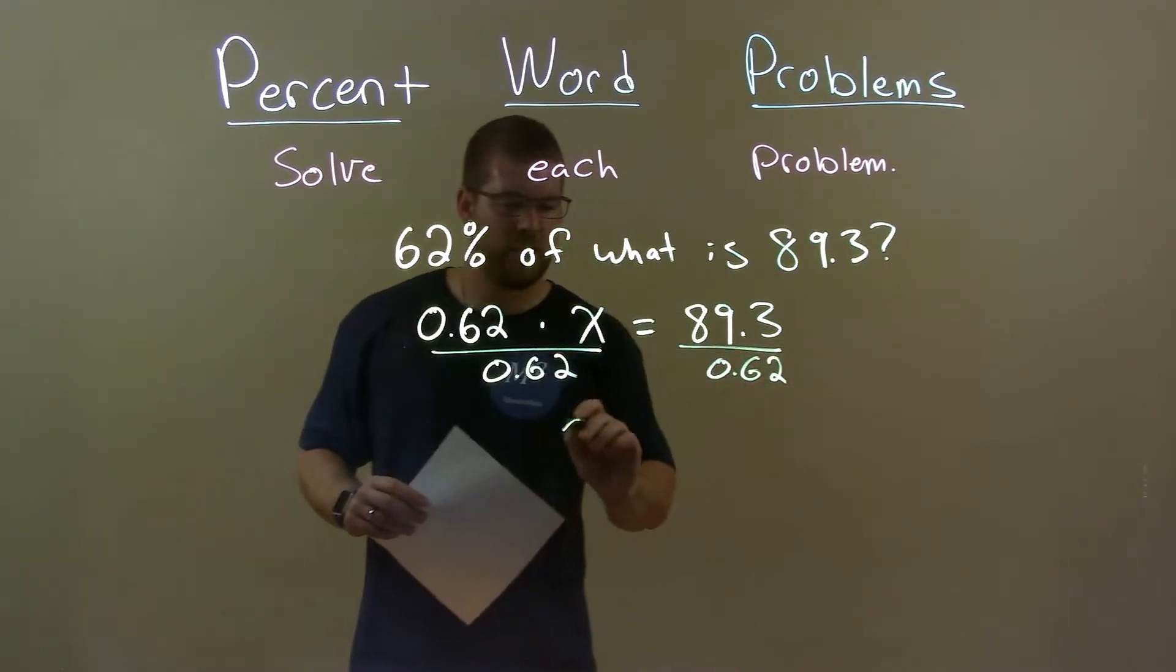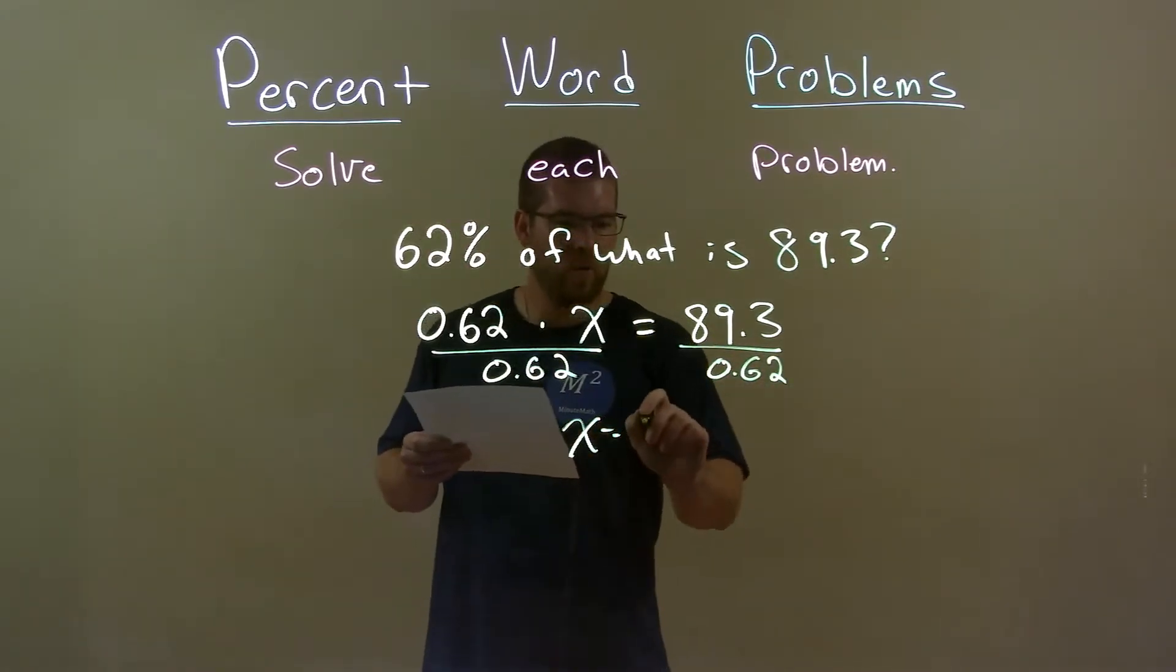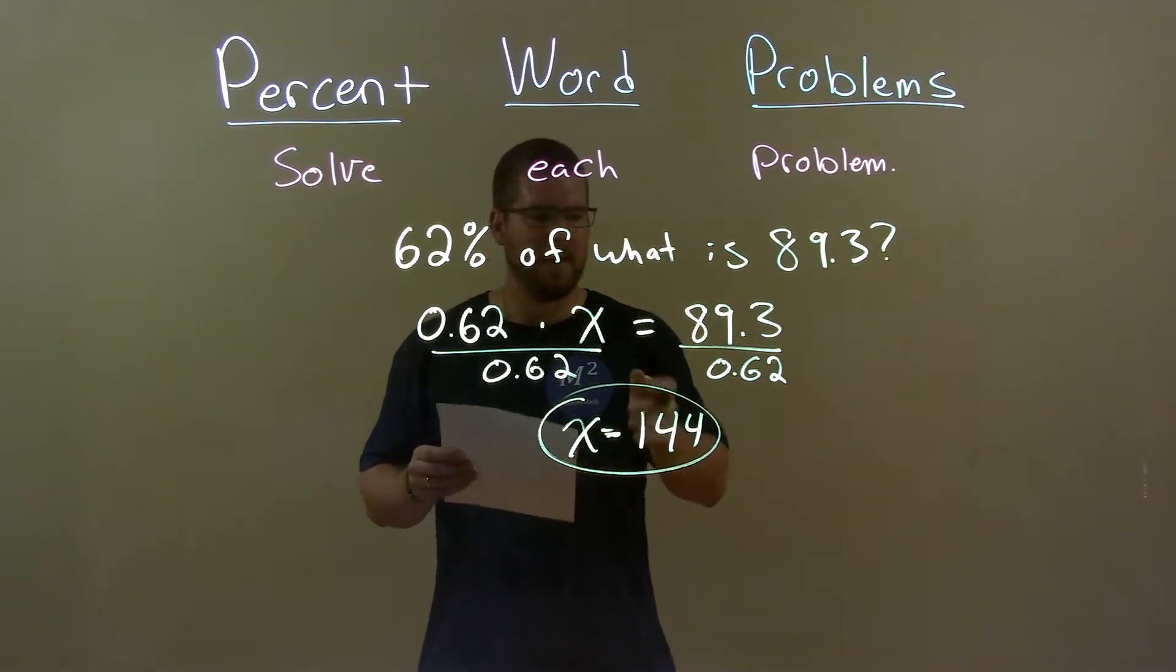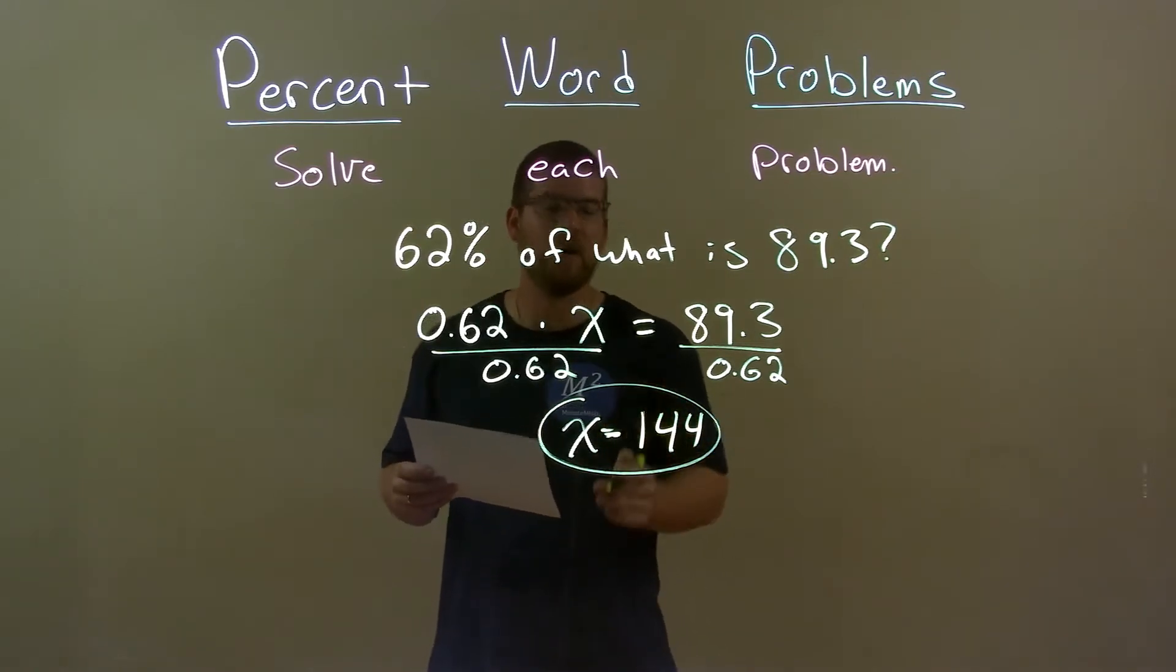And we're left with x equals, I have written down here, 144. 89.3 divided by 0.62. And there we have our final answer, 144.